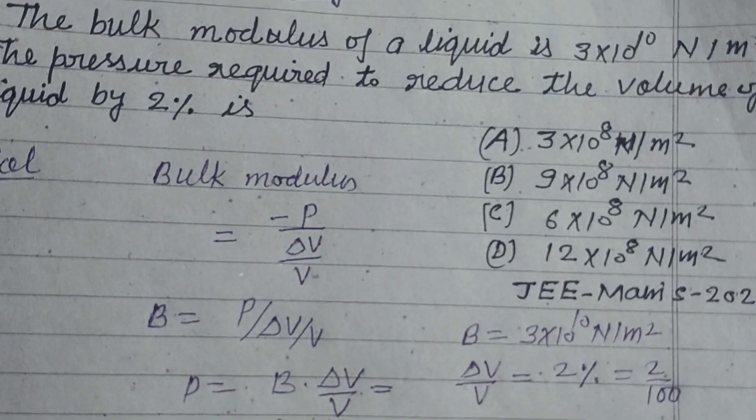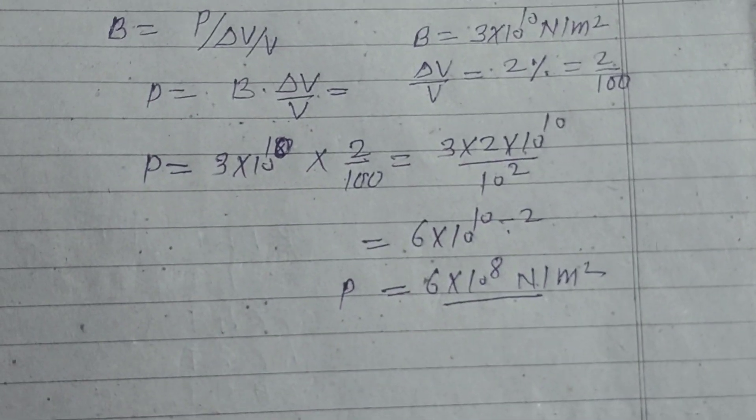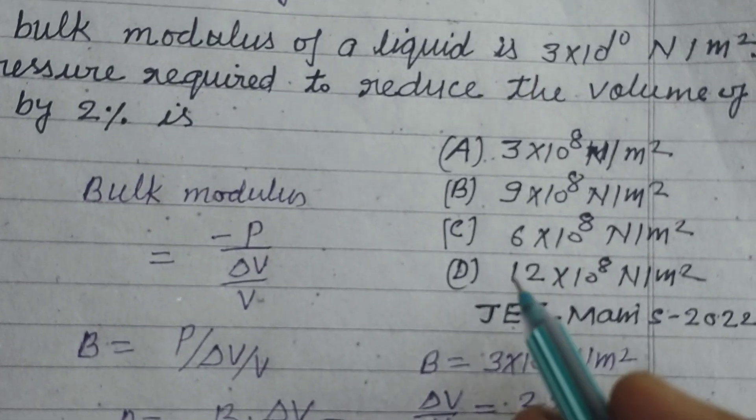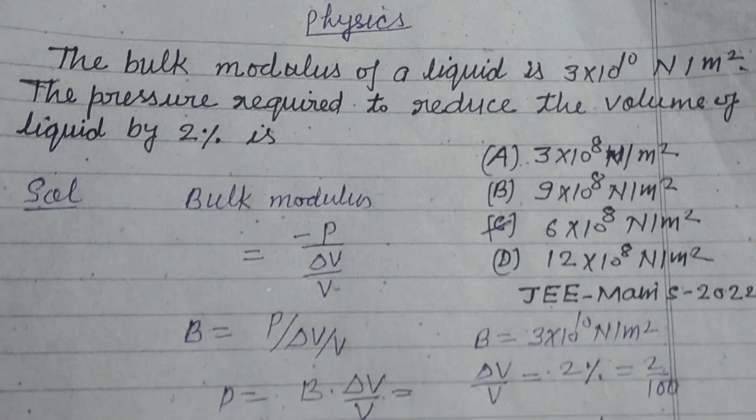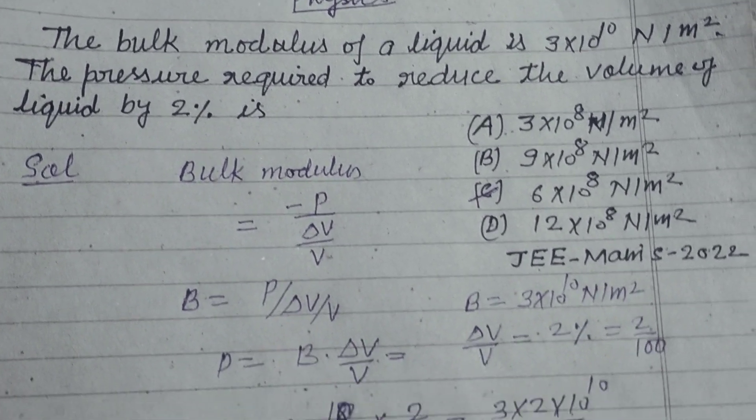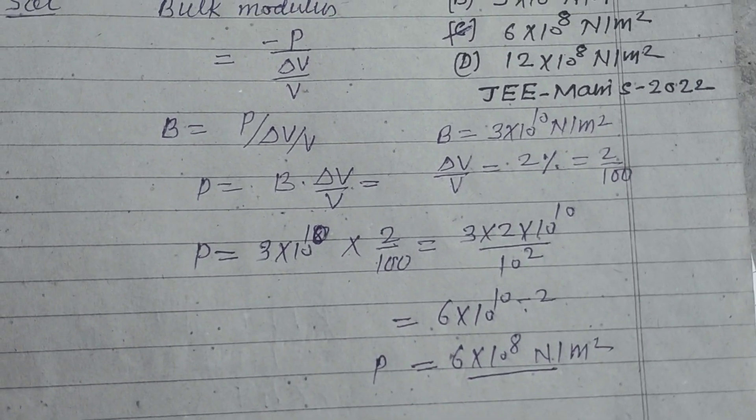This is the pressure required to reduce the volume by 2%, so the answer to this question lies in option C. Option C is correct. I hope you got it. Please like the video, subscribe to the channel, thanks for watching.